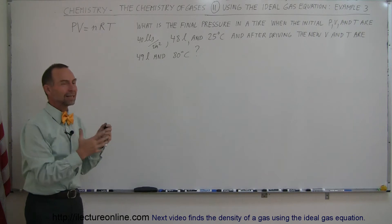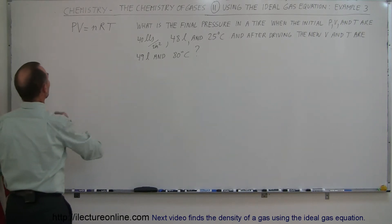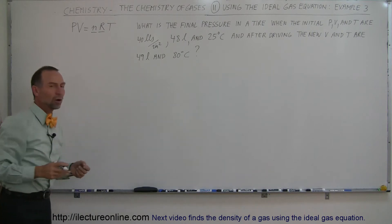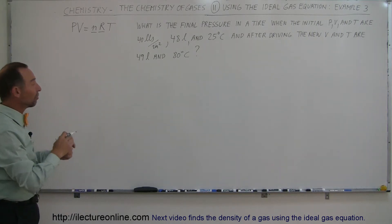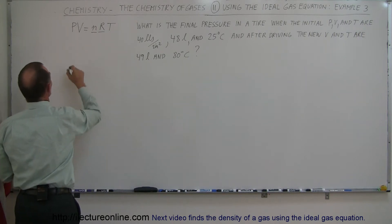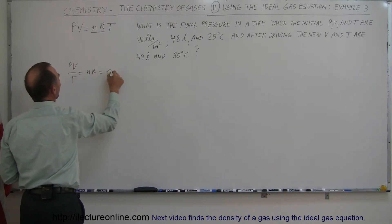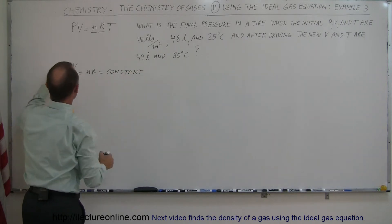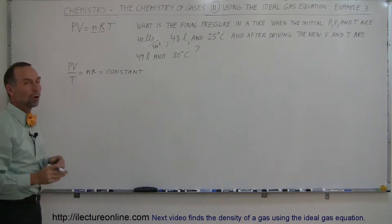So the way this works with the ideal gas equation is that we realize that the number of moles and the constant R do not change, but pressure, volume, and temperature all do change. So we're going to write this as PV over T equals NR, and of course, N and R, those are constants, so that means that the ratio of pressure times volume divided by temperature remains constant.